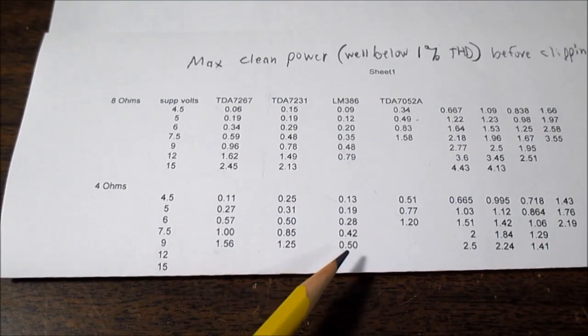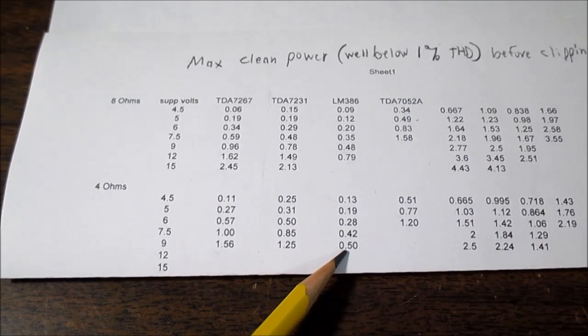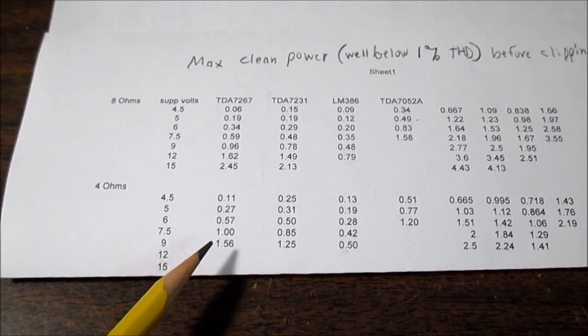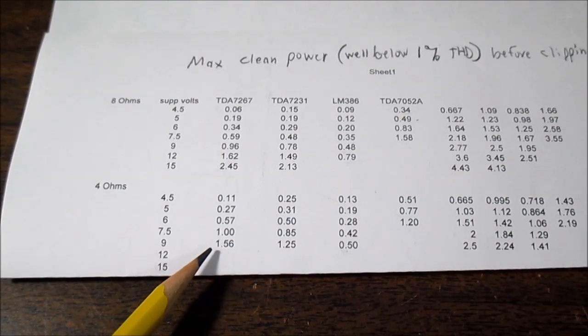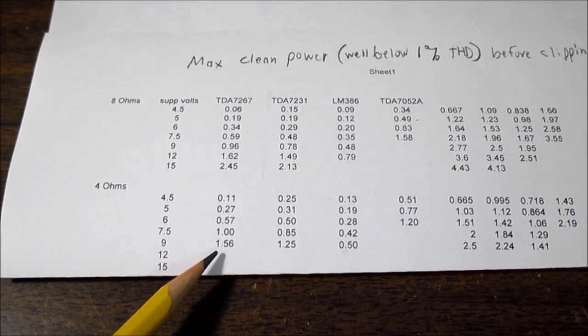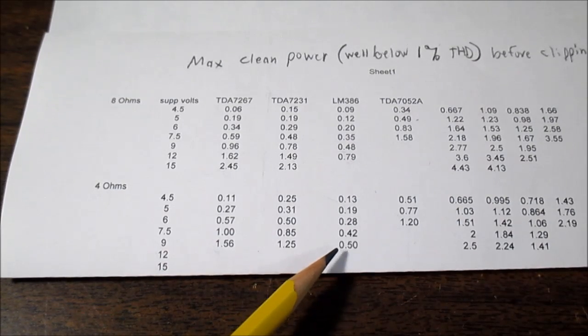So at 9 volts again, it put out half a watt. Whereas the 7267 more than tripled its output. And you know, that's not even a bridge amplifier. So it's just limited in current.